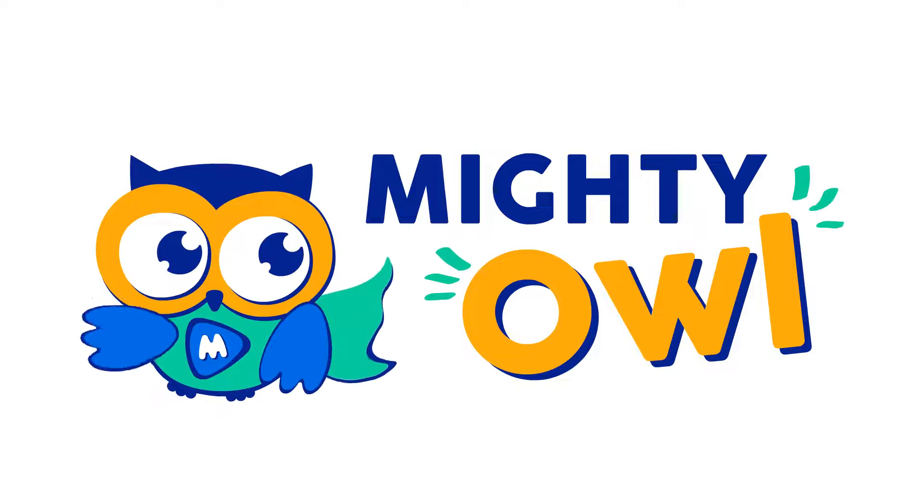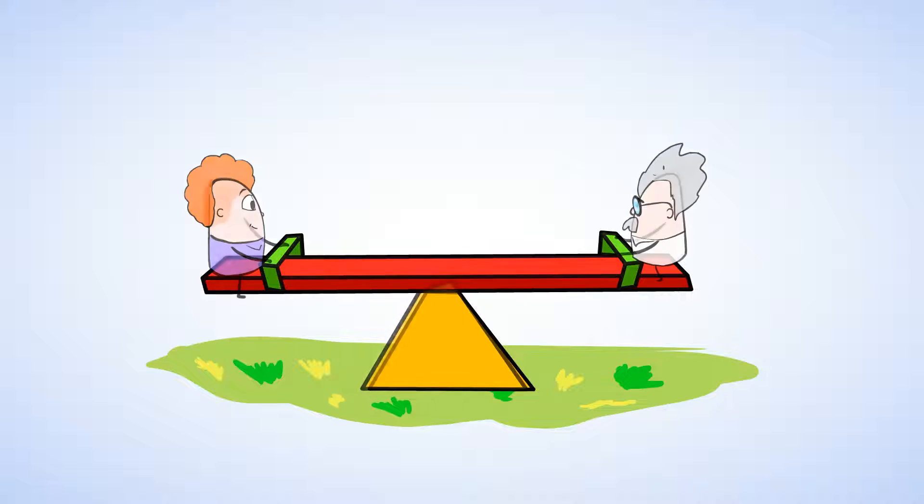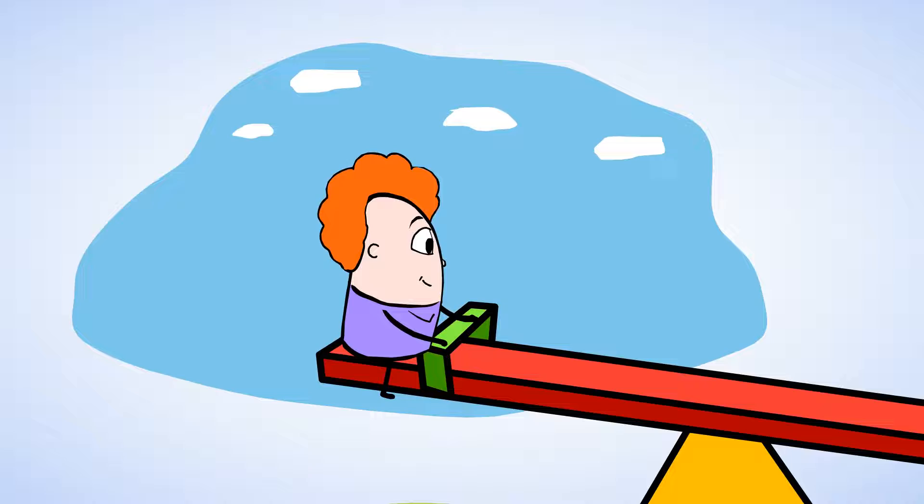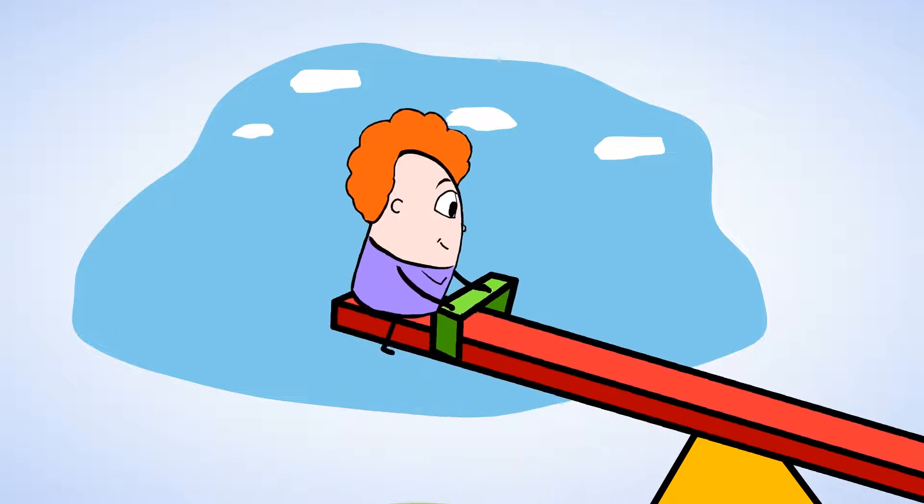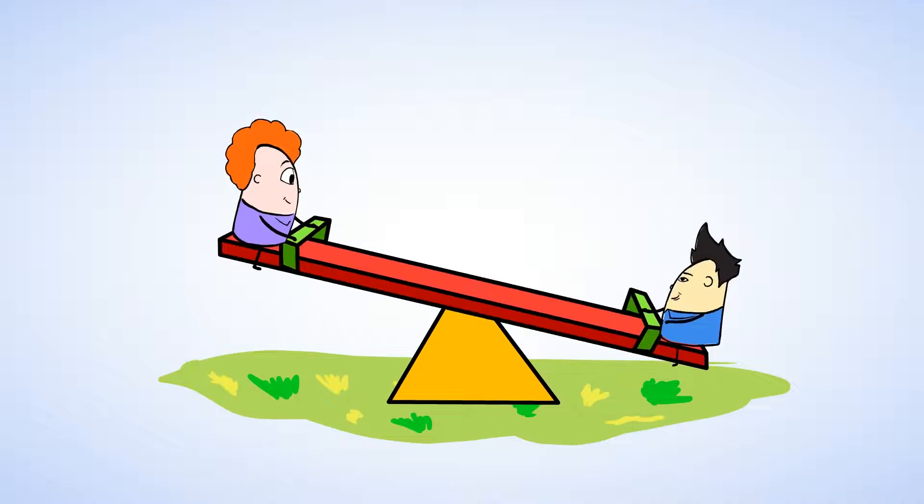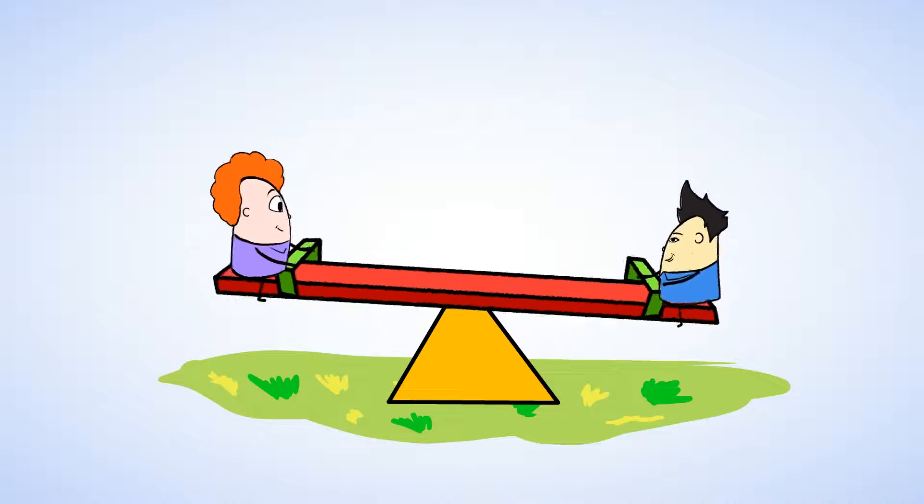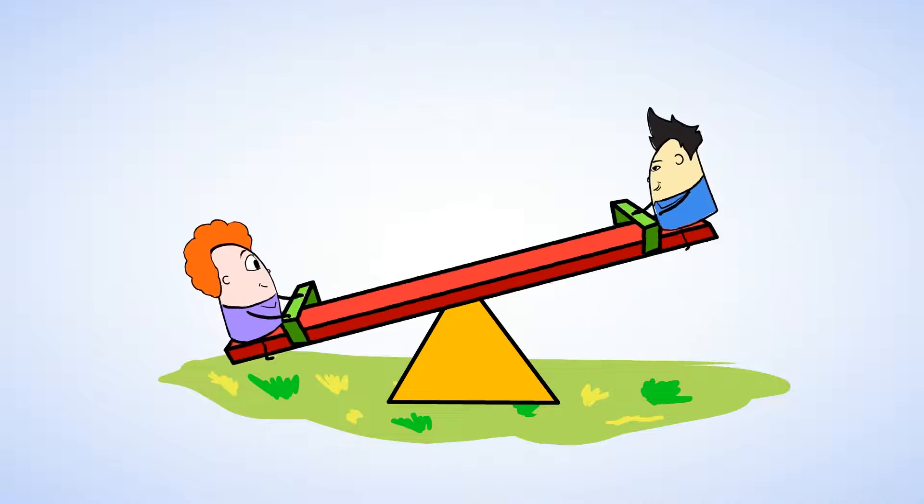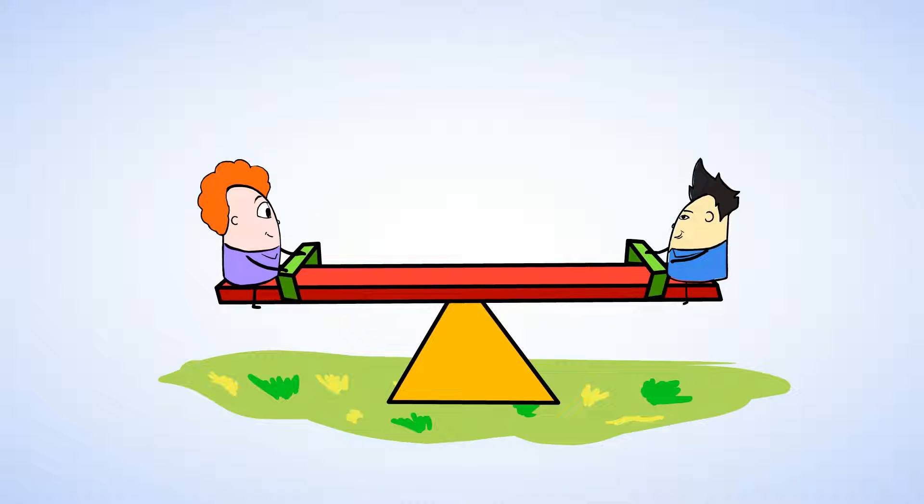Hello, this is Mighty Owl. Have you ever been to the park and played on a seesaw? Now just think for a second, if you got up on one side and your mom or dad got on the other side, what would happen? You'd go flying up into the sky, but what about if you and another kid your own age played on the seesaw? Would you fly up into the air again, or would the seesaw be balanced? It would probably be balanced.